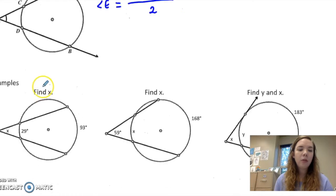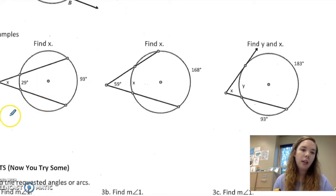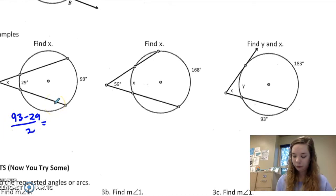Okay? So here, I would take 93 minus 29 over 2 is 32 degrees. So that's angle x.